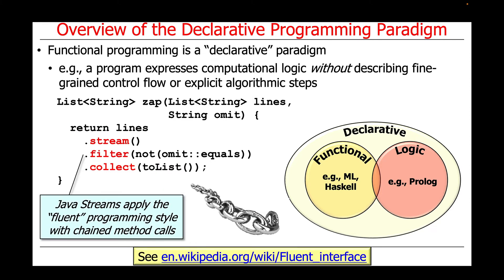Note also how Java Streams applies the fluent programming style — or fluent programming pattern — by chaining these method calls, called operations, together. We'll talk a lot more about chaining and fluent interface style later in the course.